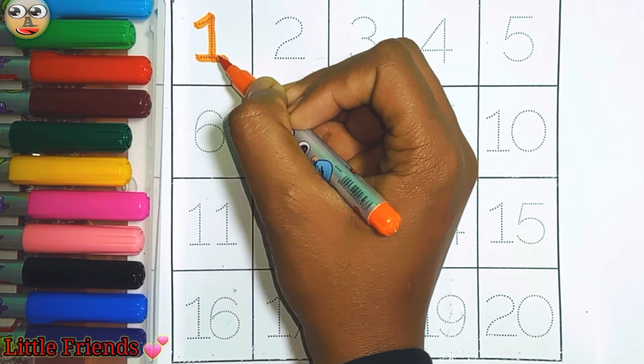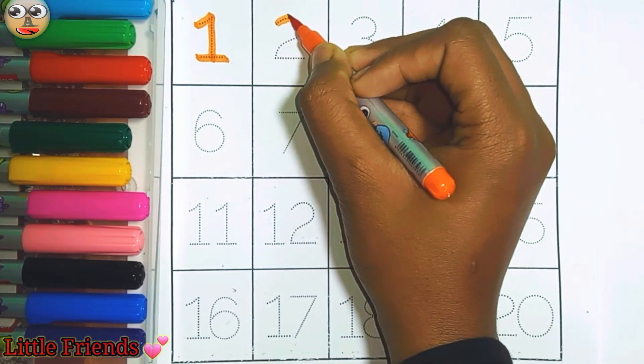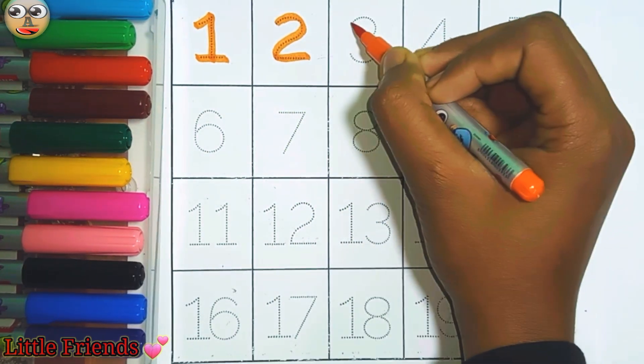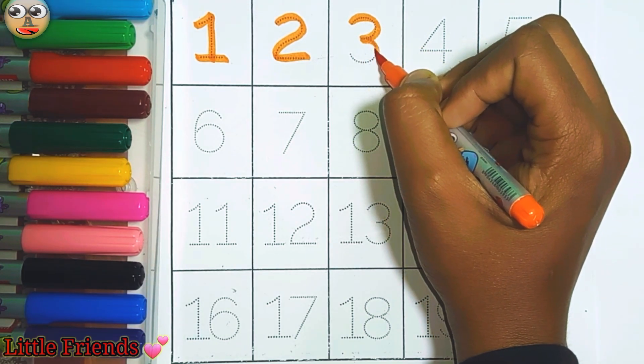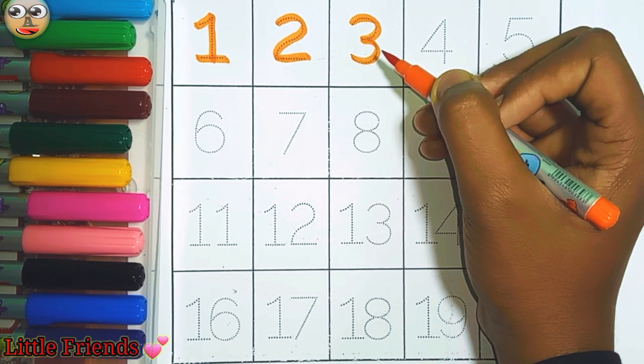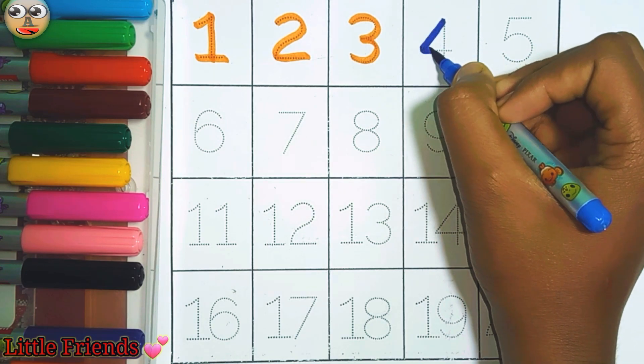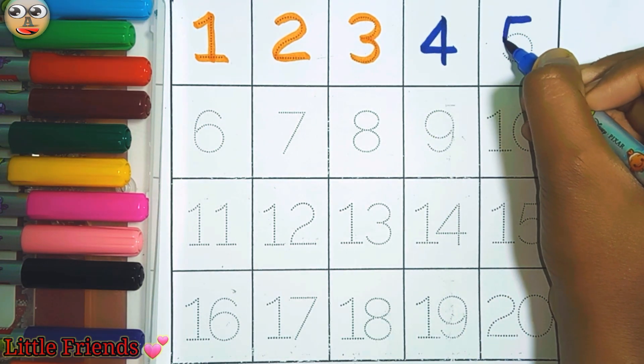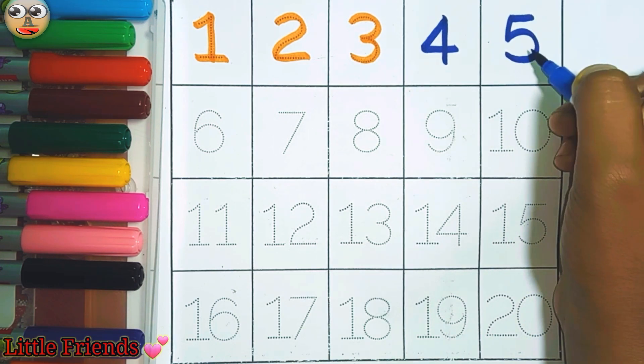1. This is 1. 2. This is 2. 3. This is 3. 4. This is 4. 5. This is 5.